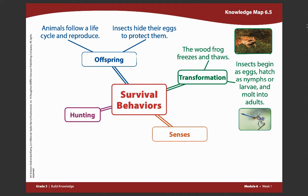Now let's move over to the category about offspring. Using both of the texts, we can determine that animals follow a life cycle and reproduce. Once they go through their life cycle of development and become adults, we know that animals reproduce.